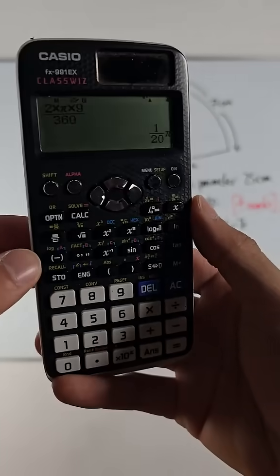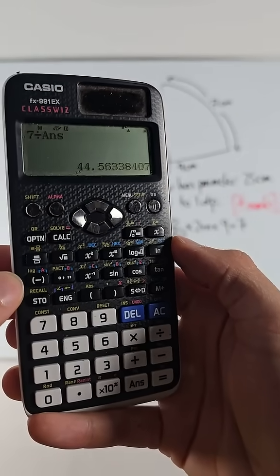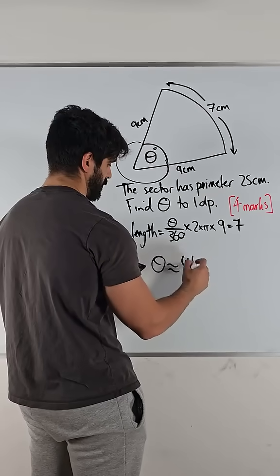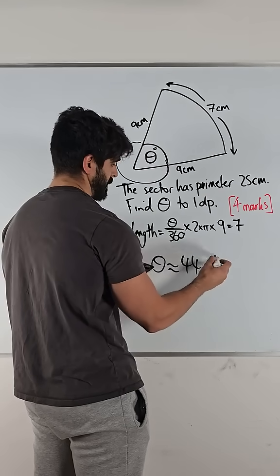So what we're going to do is 7 divided by that to get our answer. 7 divided by the answer is 44.56. They want it to 1 decimal place so that's 44.6 degrees.